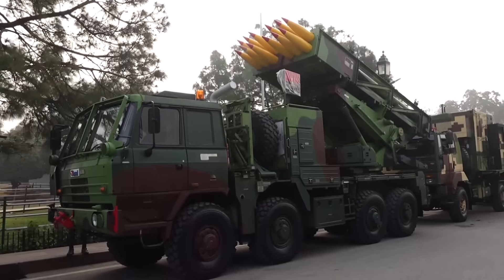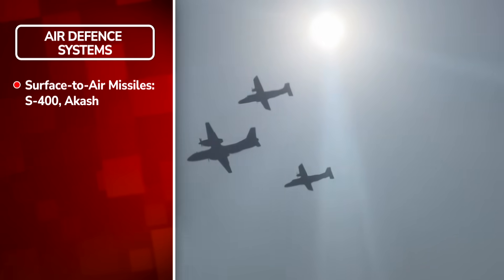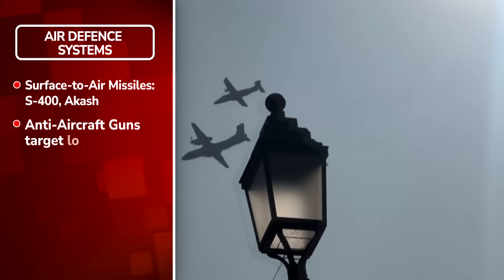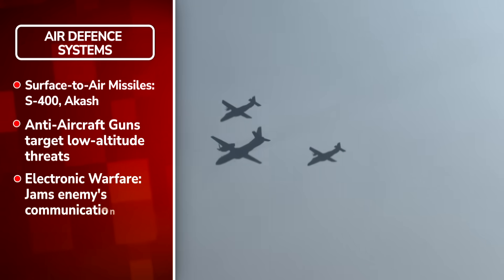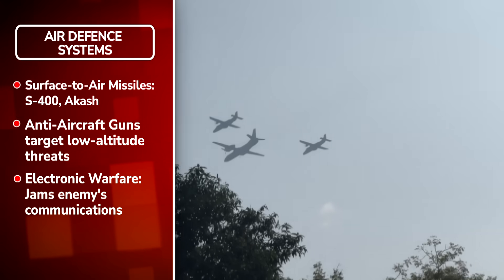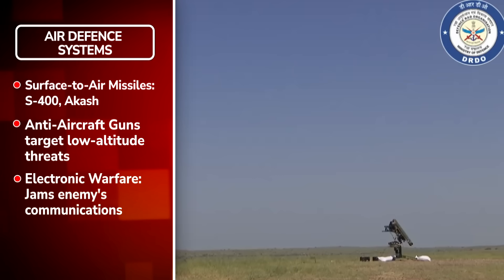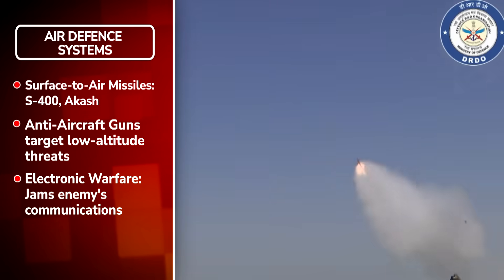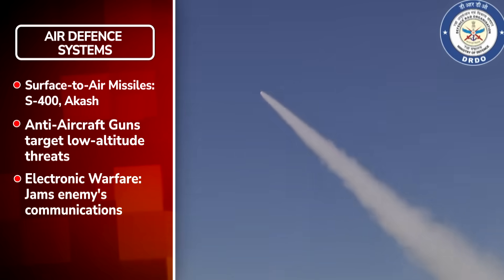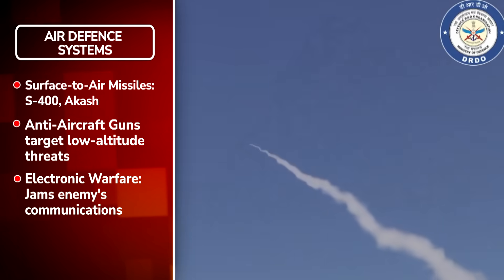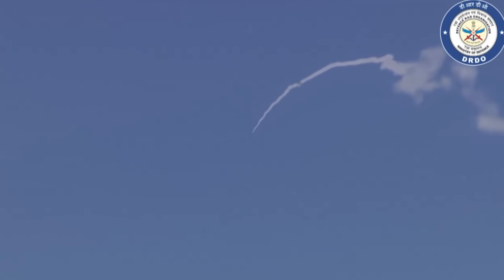As soon as a threat is detected, the interception phase begins. Fighter jets engage enemy aircraft, while surface-to-air missiles — such as India's S-400 and Akash systems — target incoming threats. Anti-aircraft guns defend against low-flying objects, and electronic warfare systems jam enemy communications, creating a layered defense to prevent any hostile intrusion into the airspace.